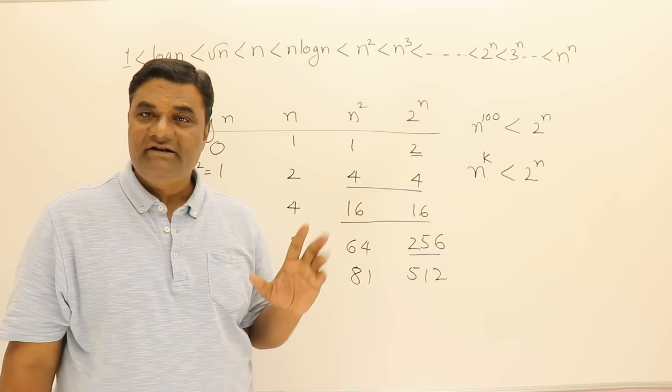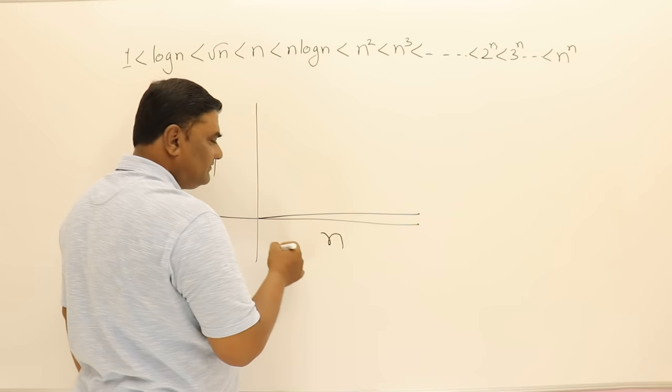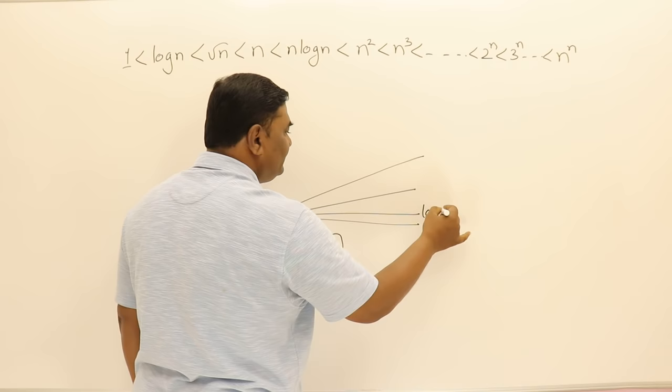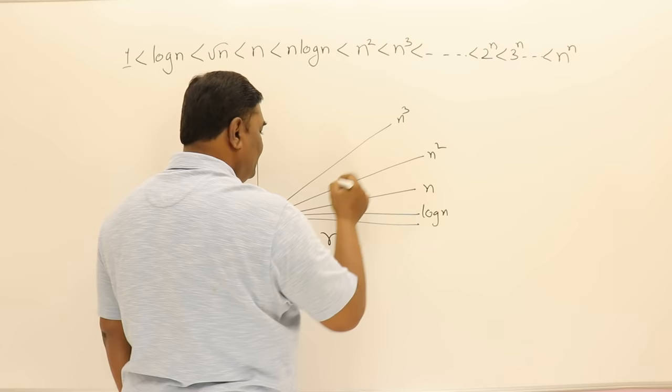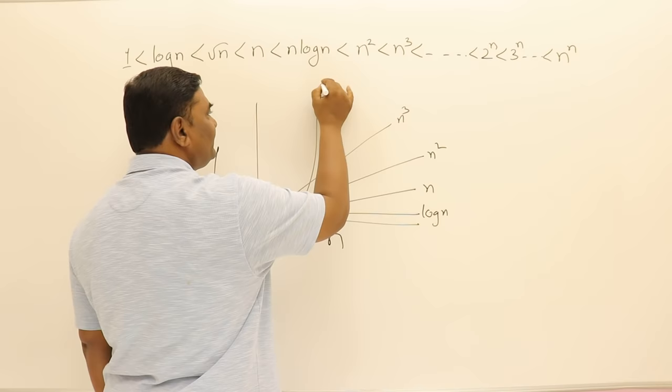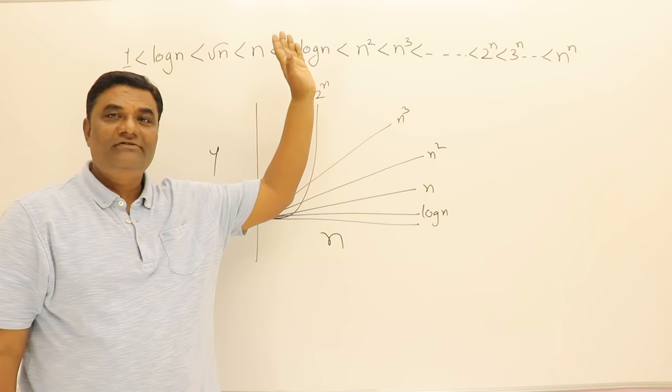If we do it on the graph, suppose this line is log n, this line is showing n, this line is showing n square, this is showing n cube, then this will show 2 power n. This represents 2 power n. So initially the value of 2 power n may be smaller then suddenly it will have a higher rate of increase.